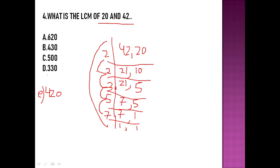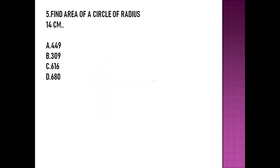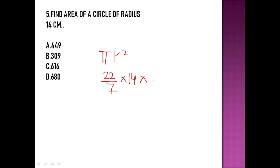The fifth question asks: find the area of a circle whose radius is 14 centimeters. To find the area of a circle, we use the formula π r², where the value of π is 22/7. We multiply 22/7 by radius squared. 14 squared means 14 multiplied by itself.